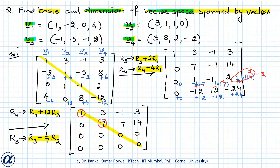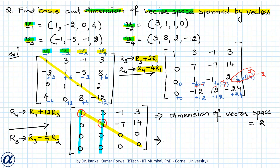The pivot elements in this matrix are the leading non-zero elements in each row — that is, 1 and 7. There are two pivot elements, so the rank of the matrix is 2. The rank equals the number of linearly independent columns, and since the columns are our vectors, there are two linearly independent vectors. The pivot columns correspond to v1 and v2, which are the linearly independent vectors among v1, v2, v3 and v4. Therefore, the dimension of our vector space is 2 and the basis is {v1, v2}.